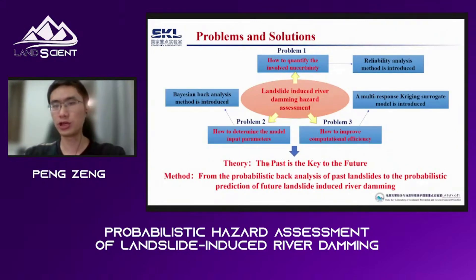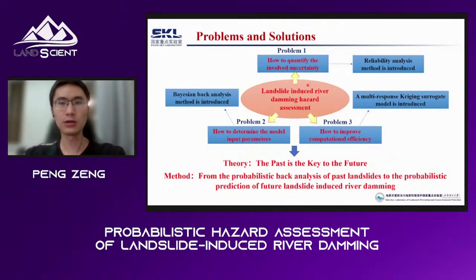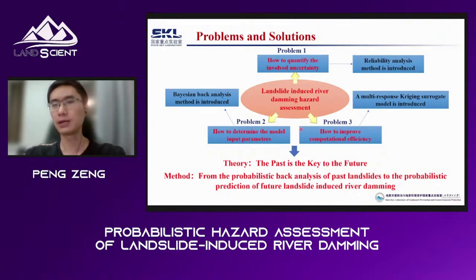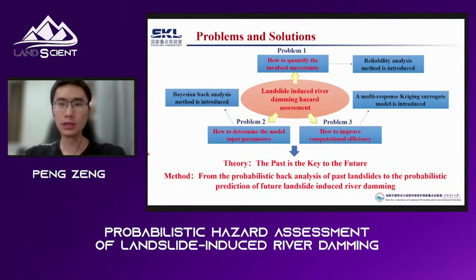Landslide-induced river damming hazard assessment involves at least three problems we consider: how to quantify the uncertainties, how to determine the input parameters, and how to improve the computational efficiency. To address these, reliability analysis, Bayesian back-analysis, and a multi-response kriging surrogate model are introduced. Our theory is that the past is the key to the future.